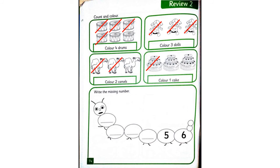Can you see this caterpillar? We are going to write the missing numbers inside it. When we start to count, we start with number one. What comes after one? Two. Very good. What comes after number two? Three. Great. And what comes after number three? Four. Excellent.